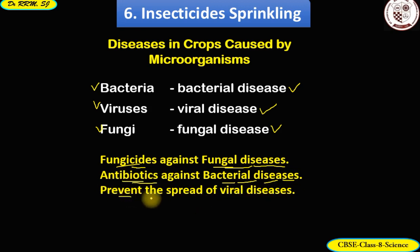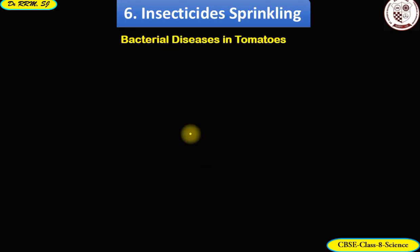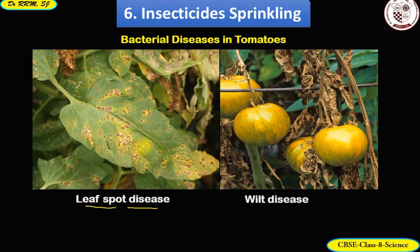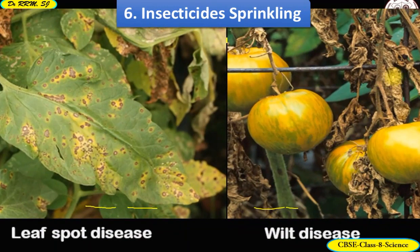Let me show some images for easy understanding. Here are two examples of bacterial diseases in tomatoes: the first is leaf spot disease — notice the yellowish spots on leaves of a tomato plant — and the second is wilt disease in tomato, with withered leaves and unhealthy fruits. Bacteria damage the crop yield and cause plants to produce unhealthy crops.